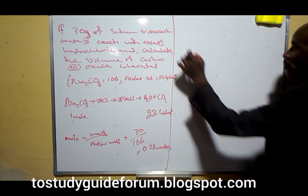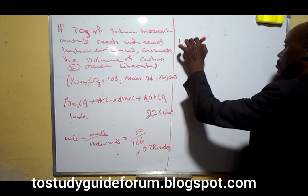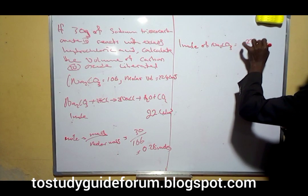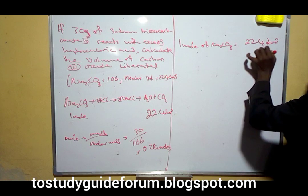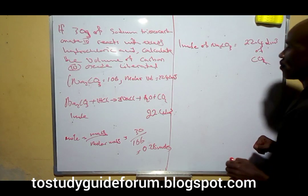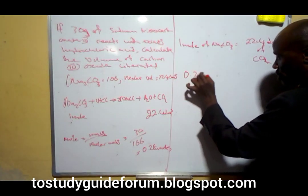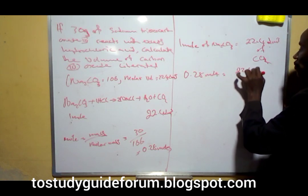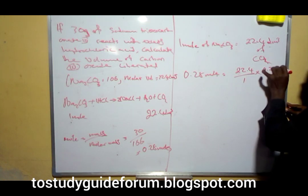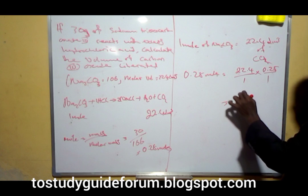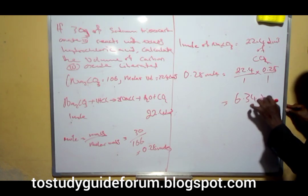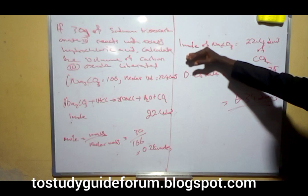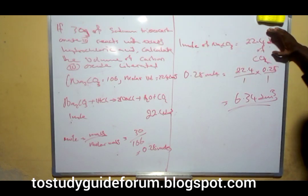Since one mole of sodium carbonate gives 22.4 dm³ of carbon dioxide, then 0.28 moles will give us 22.4 dm³ times 0.28 over 1, which equals approximately 6.27 dm³ of carbon dioxide. We can see that we moved from mass to moles, then from moles to volume.